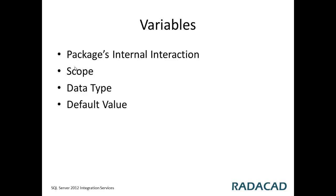Variables can have default values — for example, you can set a default value for a current year variable. Variables can also contain expressions. Expressions are used when we want to dynamically calculate the value of a variable — for example, to calculate the current date or current year. We will talk about expressions in a completely separate video.